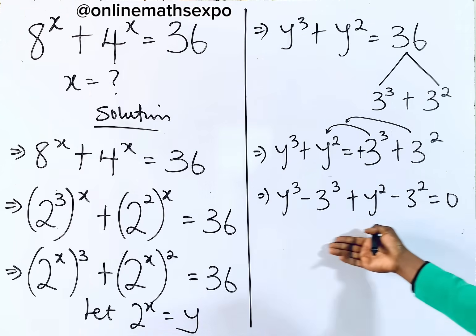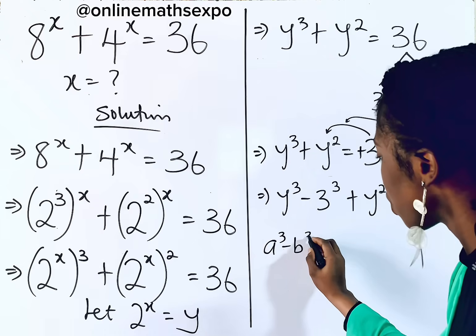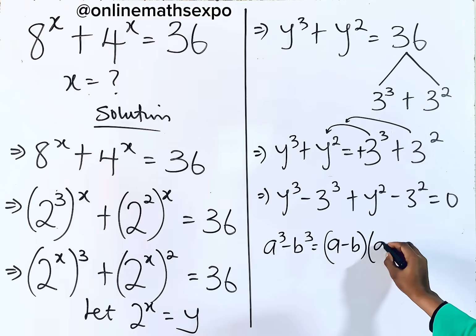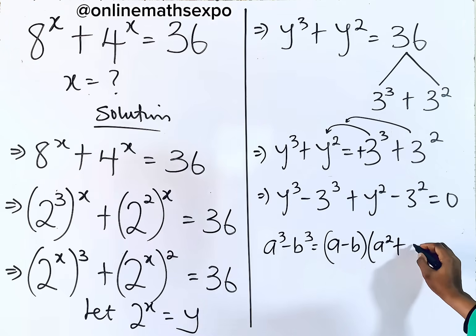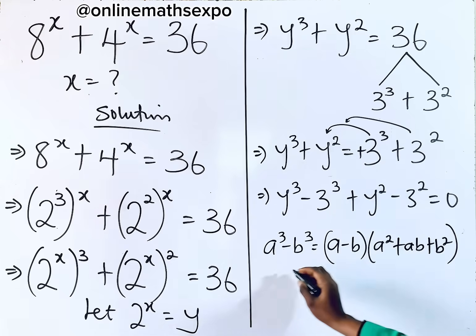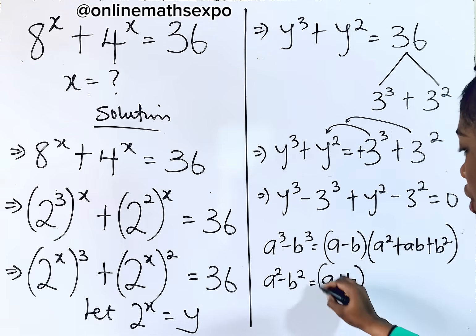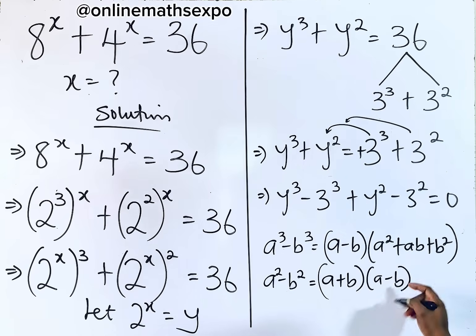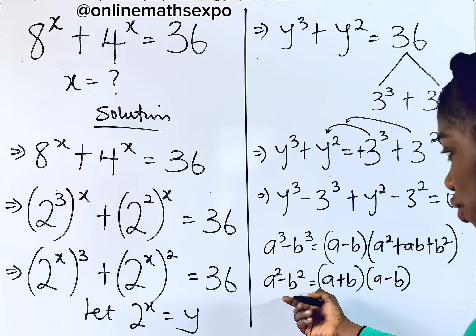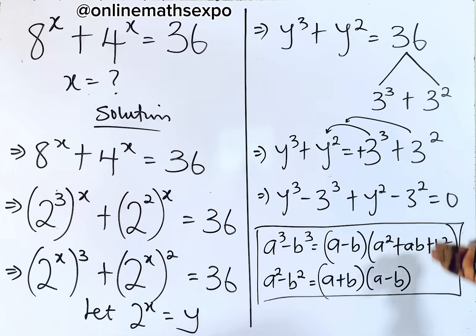Now when you get to this point, remember that for every a³ minus b³, it equals (a − b)(a² + ab + b²). And for every a² minus b², it equals (a + b)(a − b). This is our difference of two cubes and difference of two squares — these formulas are going to guide us in solving this.